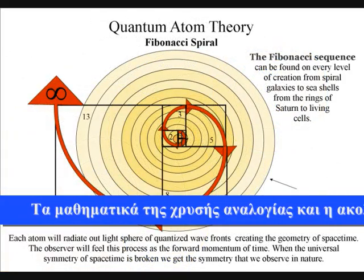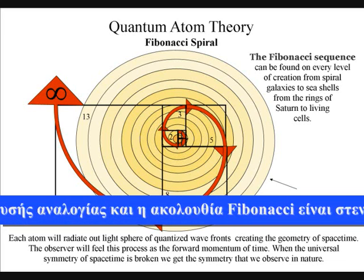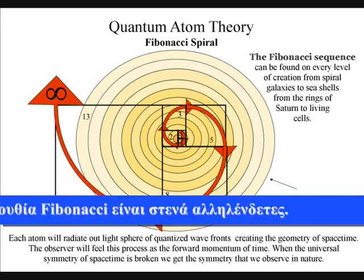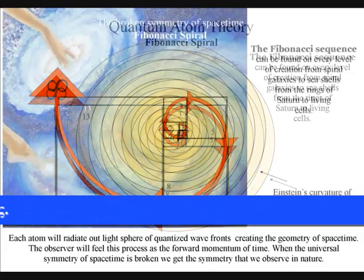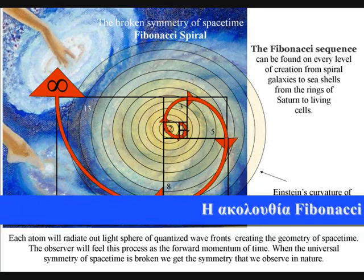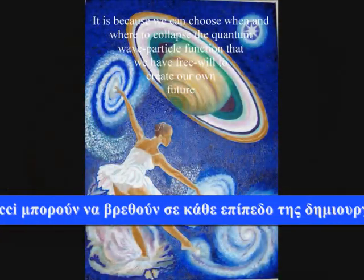The mathematics of the golden ratio and the Fibonacci sequence are intimately interconnected. The Fibonacci sequence can be found on every level of creation from spiral galaxies to seashells, from the rings of Saturn to the living cells.